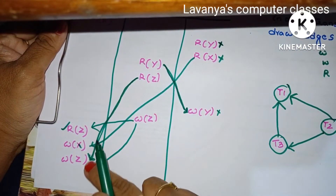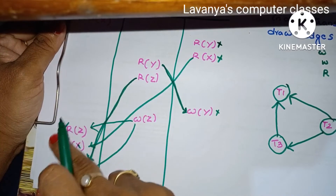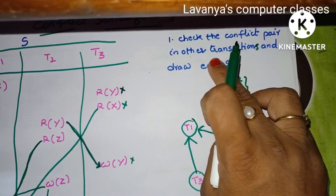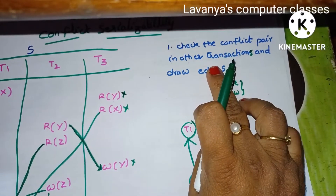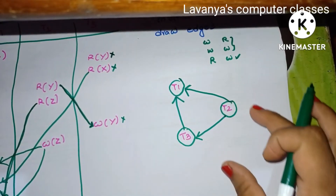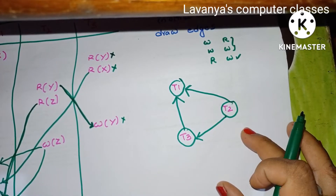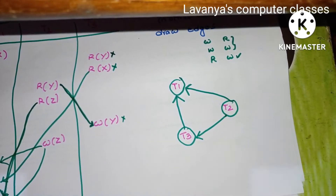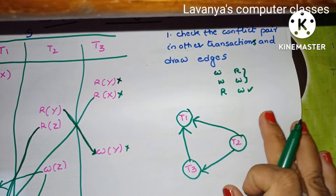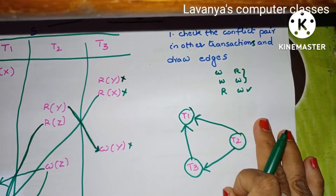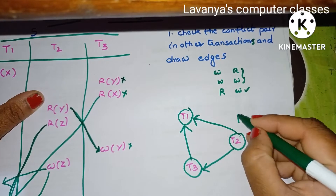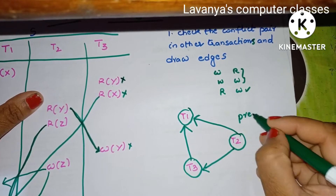If the conflict is within the same transaction, there is no problem — leave it. You are checking conflicts only across other transactions. This is the precedence graph after finding all conflict pairs.